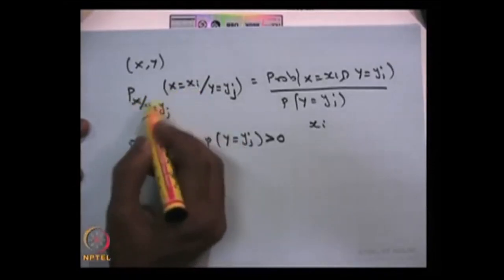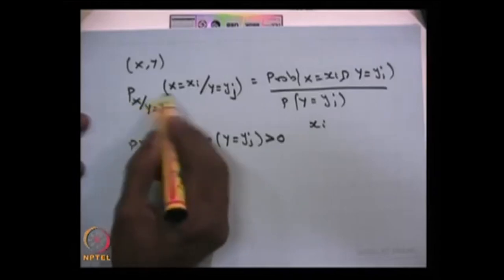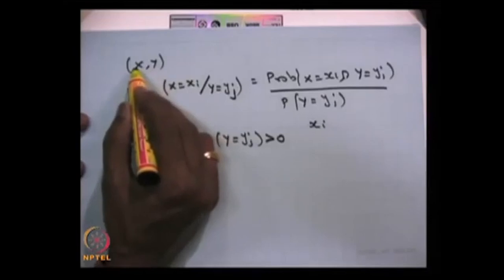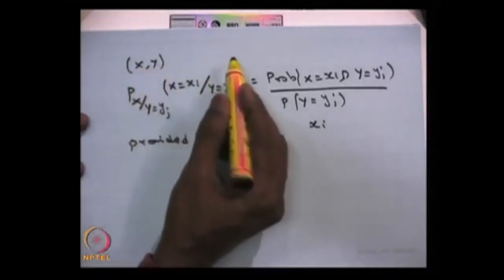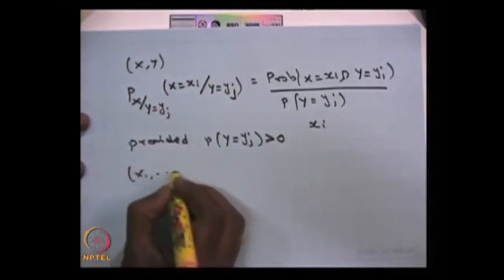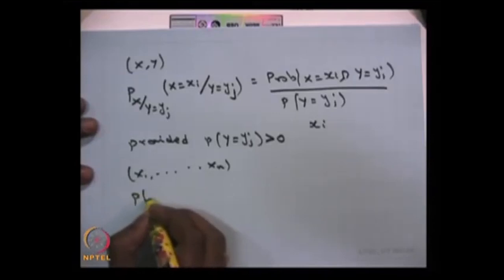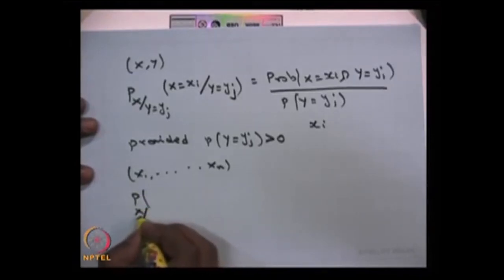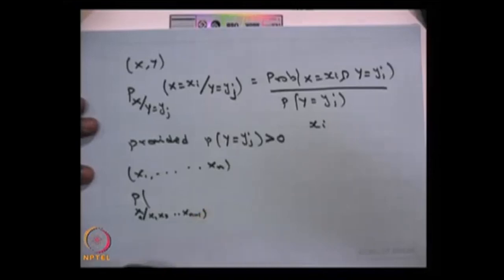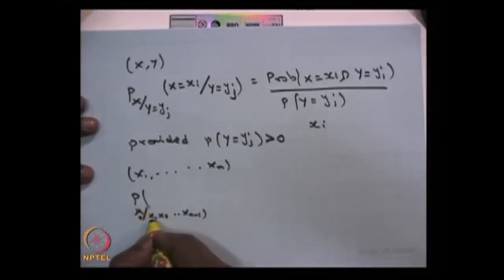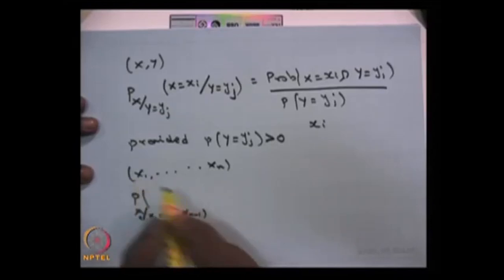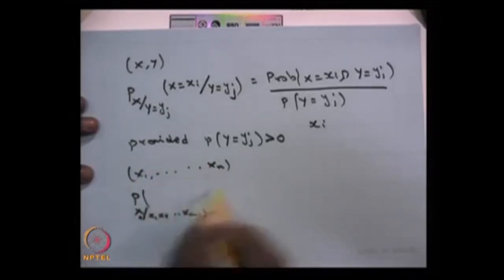This is called the conditional distribution of X given the other random variable, and this logic can be extended to more random variables. If you have n discrete random variables X1, X2, ..., Xn, you can always define what is the distribution of Xn given the distribution of X1, X2, ..., X(n-1). It is still a one-dimensional random variable Xn, given that X1 through X(n-1) have taken particular values. Similarly, you can find the joint distribution of a few random variables given all other random variables have taken some value.